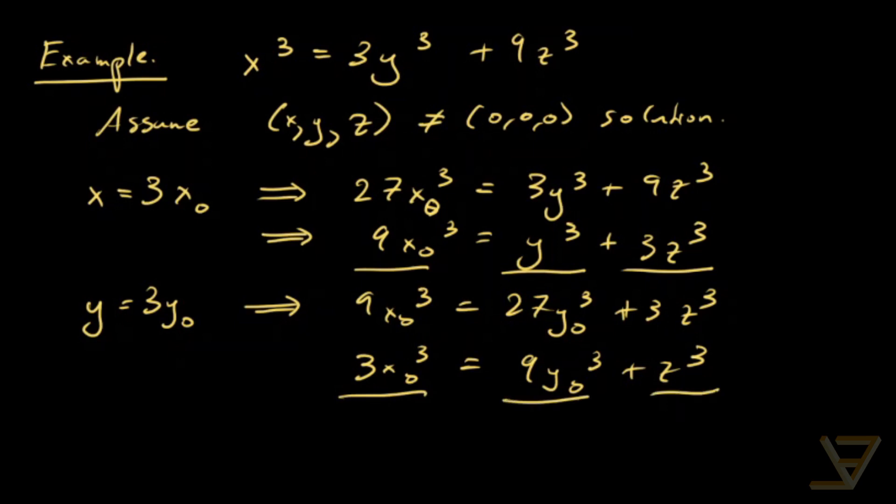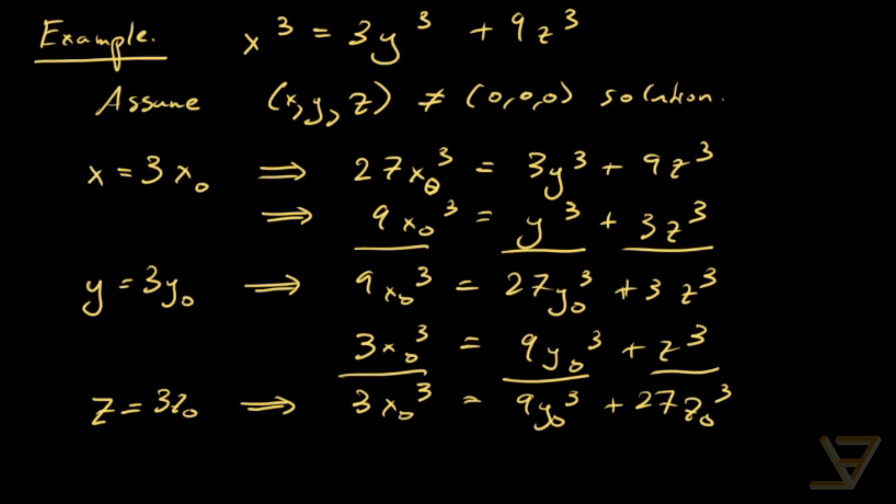And so since 3 divides this and 3 divides this, 3 also has to divide z. So z is then equal to 3z_0, which then tells us that 3x_0 cubed is equal to 9y_0 cubed plus 27z_0 cubed. And that then tells us that x_0 cubed is equal to 3y_0 cubed plus 9z_0 cubed.